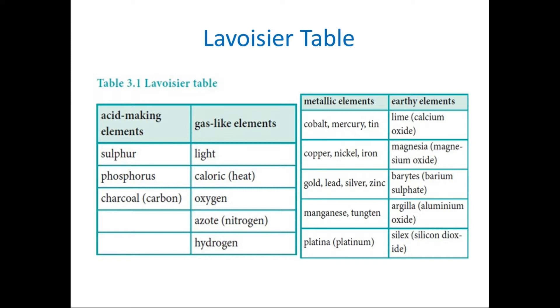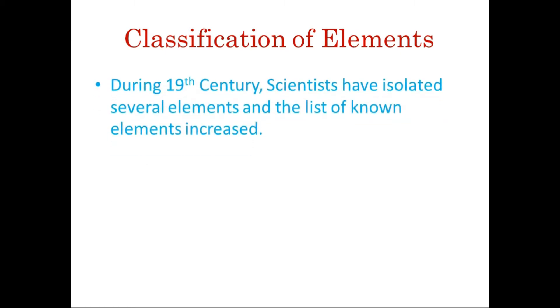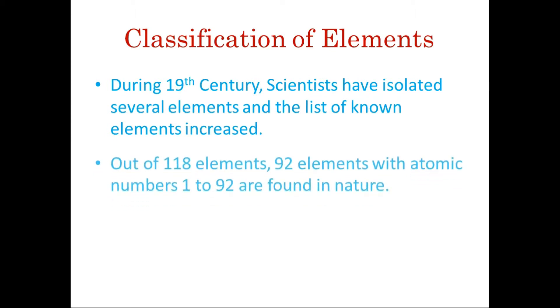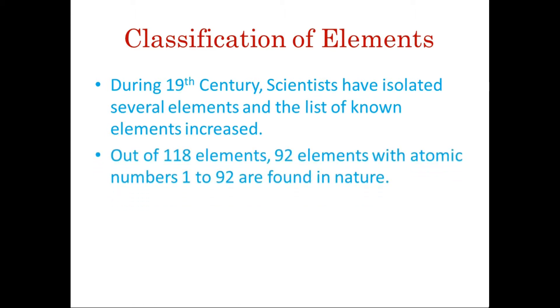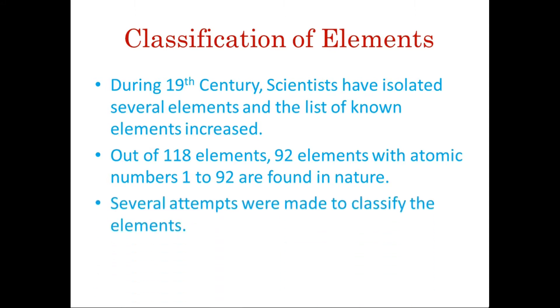There were 23 elements classified by Lavoisier. In the 19th century, scientists discovered many more elements and the existing list was not enough. There are now 118 elements total, with the first 92 being natural. Several attempts were made to classify all these elements.